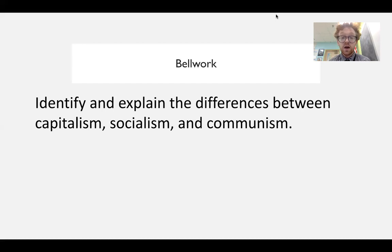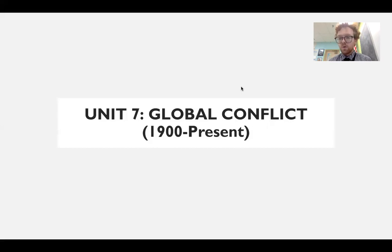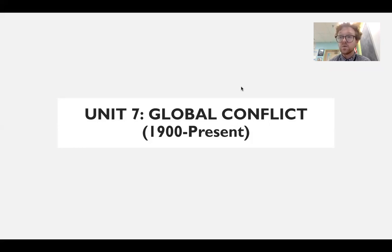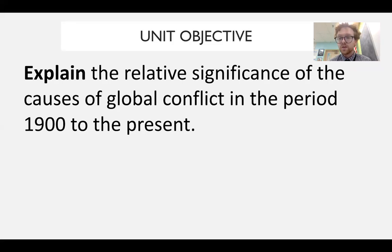The bell work is on the screen: identify and explain the differences between capitalism, socialism, and communism. Unit 7 is all about global conflict. We're going to talk about international conflict leading up until the Second World War, covering everything basically from 1914 to 1945. The unit objective is what you are responding to on the cover page — explain the significance of causes of global conflict in the period between 1900 and the present. This is asking for a general overview of the 20th century as it relates to conflict.